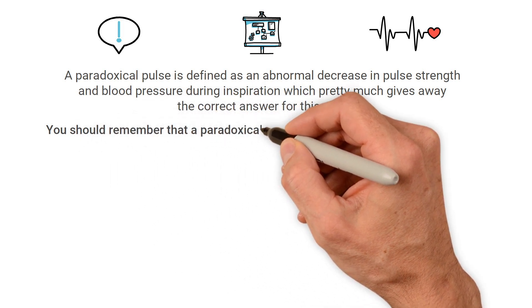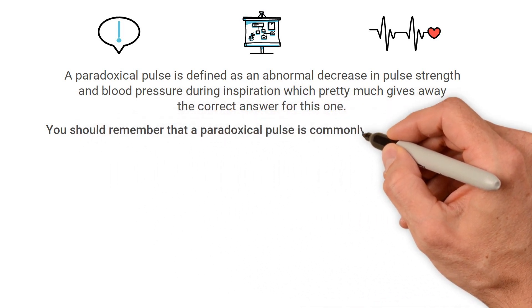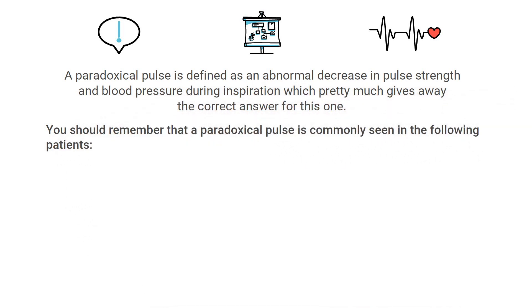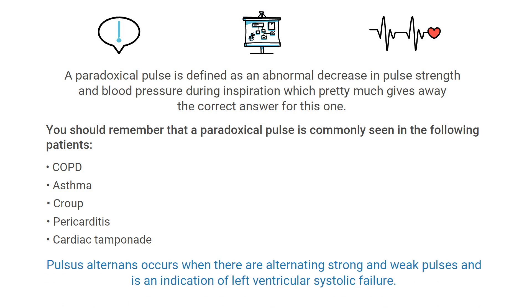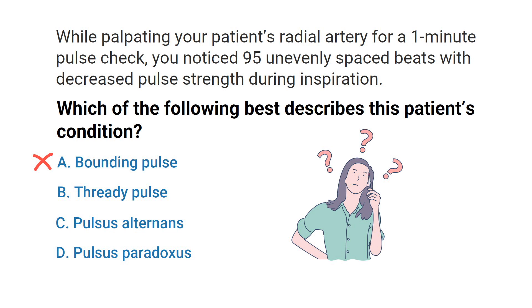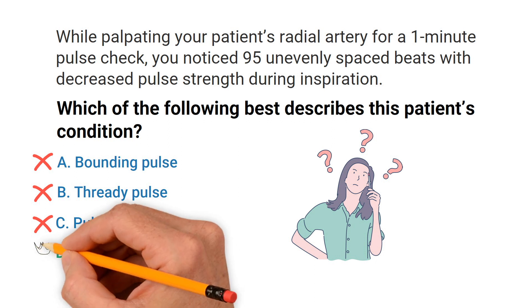You should remember that a paradoxical pulse is commonly seen in the following patients: COPD, asthma, croup, pericarditis, and cardiac tamponade. Pulsus alternans occurs when there are alternating strong and weak pulses, and this is an indication of left ventricular systolic failure. None of the other answer choices fit the description, so the correct answer is D — Pulsus paradoxus.